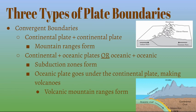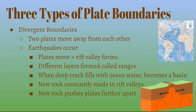In the case of an oceanic and oceanic plate colliding, the younger and newer plate will probably stay up while the older, denser, and cooler plate goes underneath. When an oceanic plate goes under a continental plate, it makes volcanoes, and volcanic mountain ranges can form.